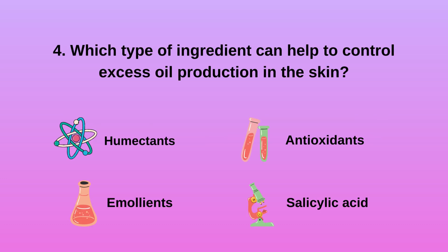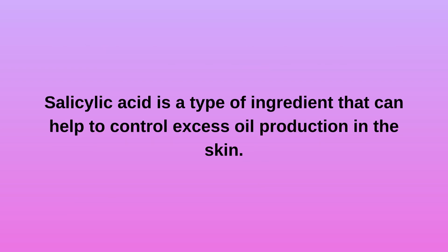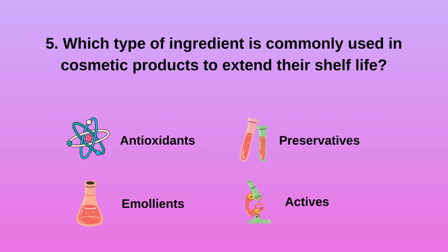4. Which type of ingredient can help to control excess oil production in the skin? A. Humectants. B. Emollients. C. Antioxidants. D. Salicylic acid. Salicylic acid is a type of ingredient that can help to control excess oil production in the skin.